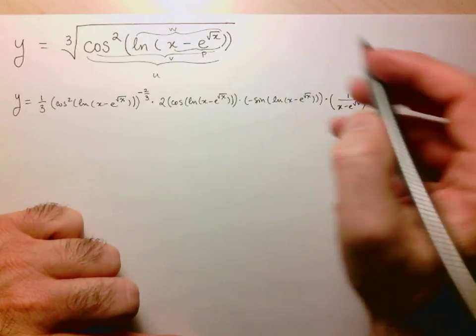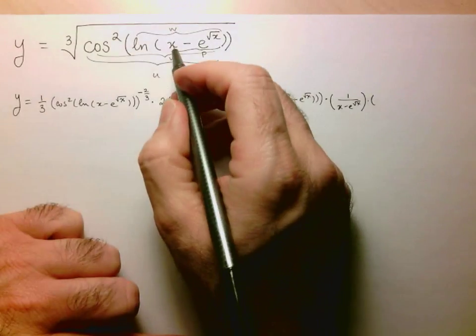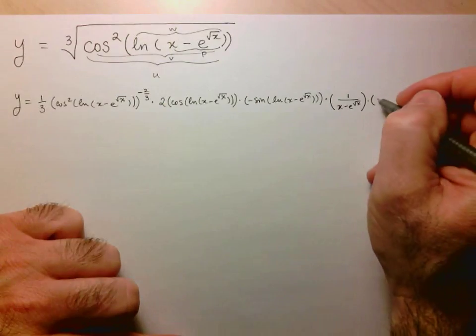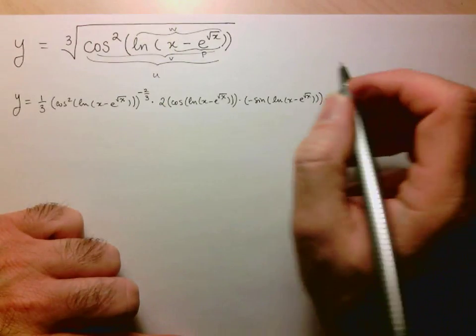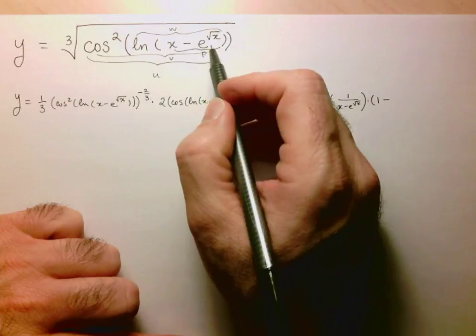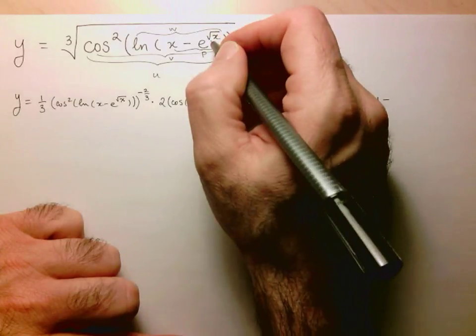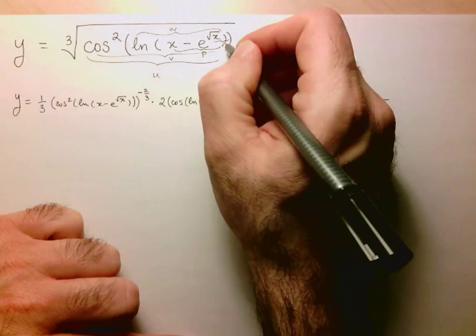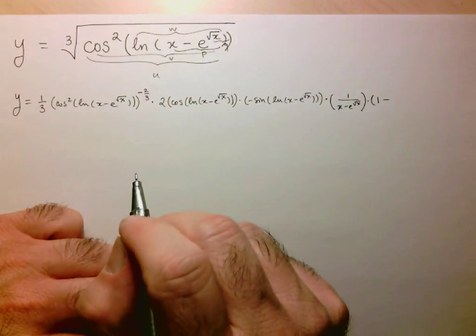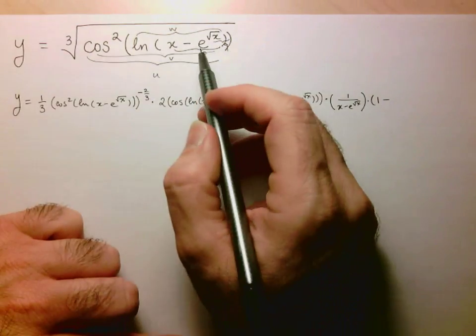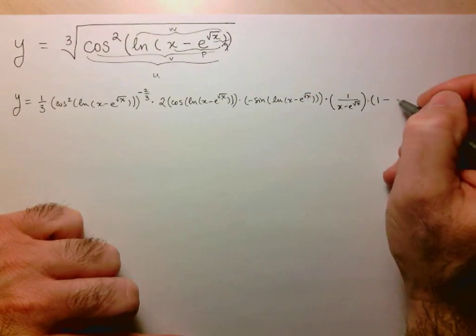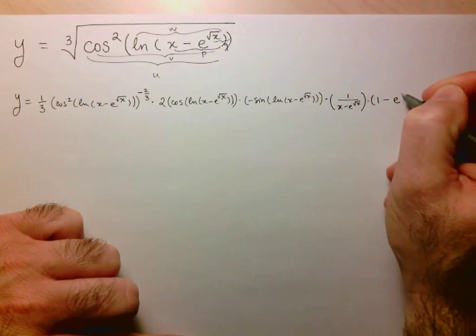Now I have to take the derivative of p with respect to x. The derivative of x, nice and easy, just equal to 1 minus, now I have to take the derivative of e to the √x. I need to make this expression, I'll call that q.